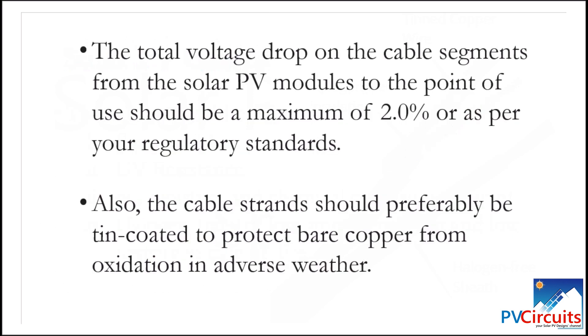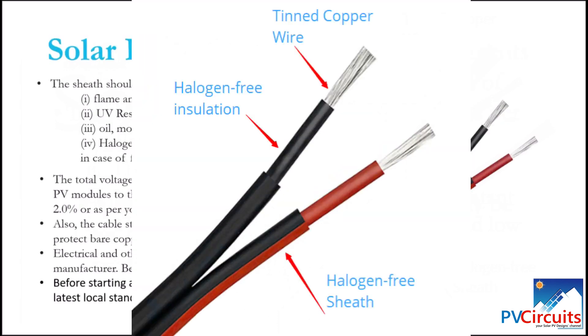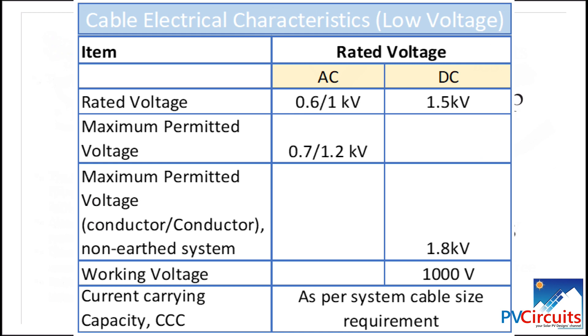It is also required that the total voltage drop on the cable segment from the solar PV module to the point of use should be a maximum of two percent, that is on the DC side. Also, the cable strands should be preferred to be tin coated. This is to protect bare copper from oxidation in adverse weather. Also be aware that electrical and other physical properties vary with manufacturer and there are sometimes cheap imitations in the market.